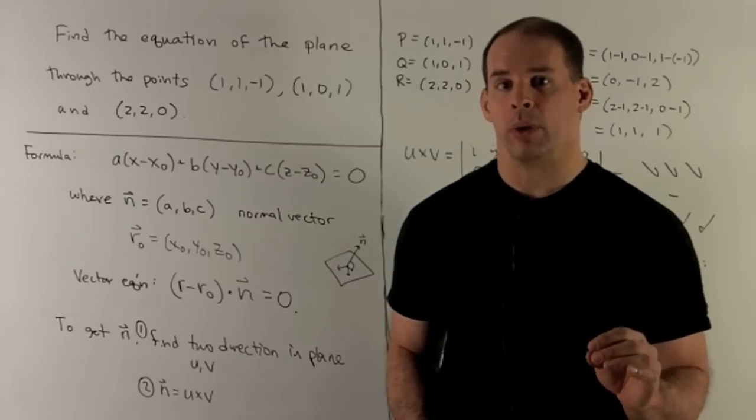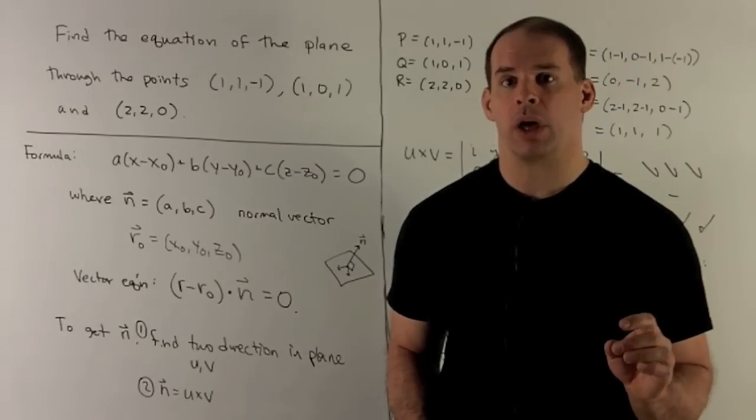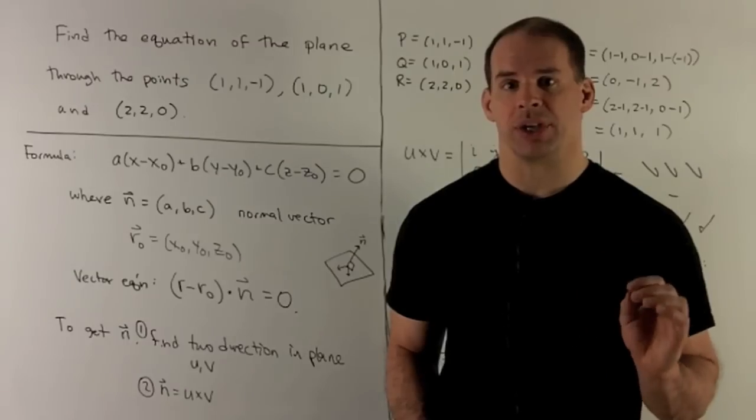Find the equation of the plane through the points (1, 1, -1), (1, 0, 1), and (2, 2, 0).